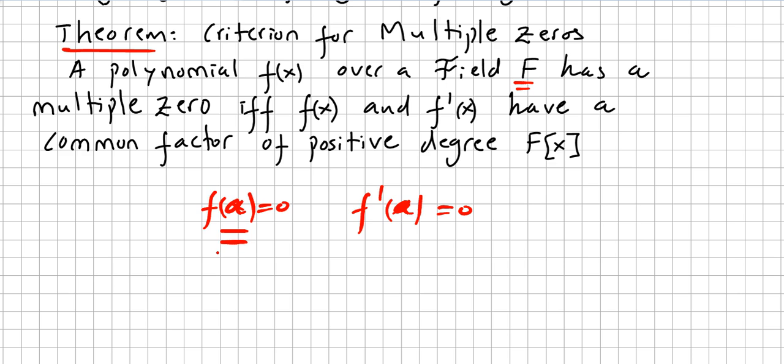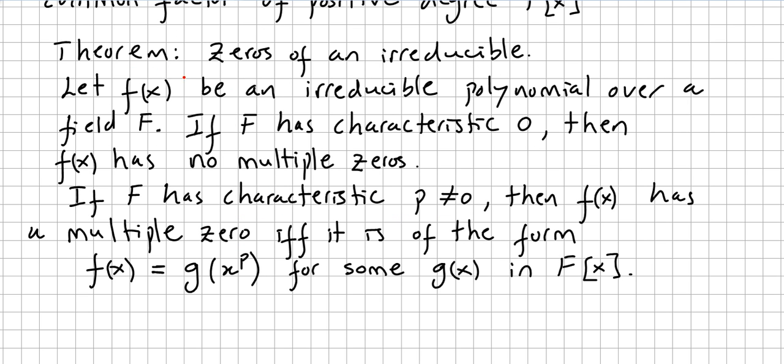Theorem: Zeros of an Irreducible Polynomial. Let f(x) be an irreducible polynomial over a field F. If F has characteristic zero, then f(x) has no multiple zeros.